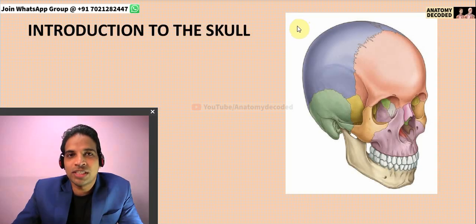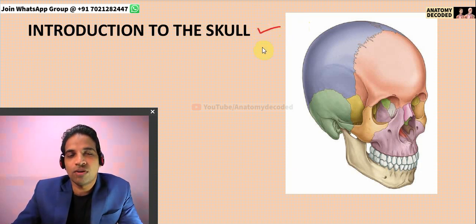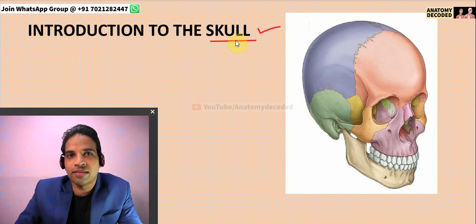Hello everyone, welcome to this first session on head and neck. As per request from all students, I am beginning with the head and neck sessions. In this session, we will be starting with the skull bone. Skull forms the basis of the head and neck. The bones included in the head and neck region are: the skull, the cervical vertebrae which are seven in number, and the hyoid bone.